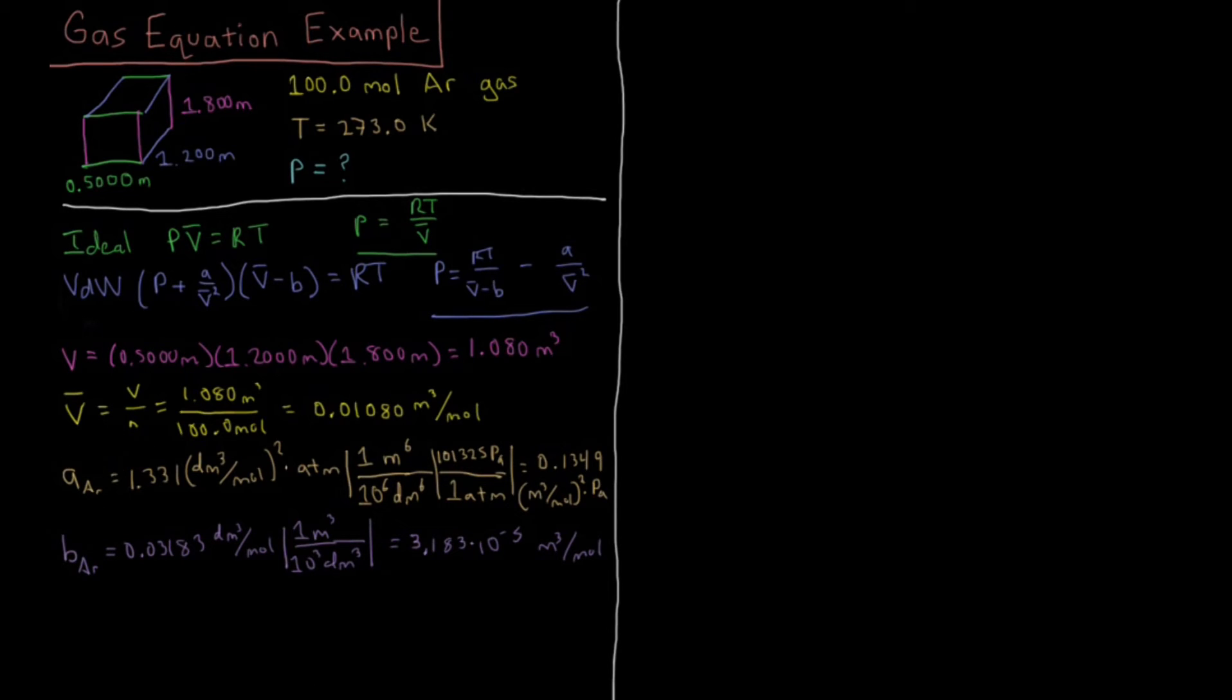So we have those two parameters now, let's go ahead with our original calculation. For the ideal gas law, P equals RT. R is 8.314 joules per mole Kelvin times temperature being 273.0 Kelvin for this example, divided by our molar volume which we calculated to be 0.01080 meters cubed per mole.